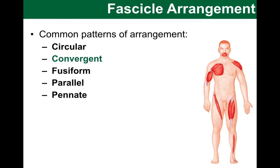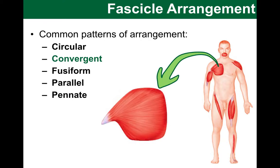How about convergent ones? In convergent fiber arrangements we have a broad origin that then converges into one insertion. The example we have here is the pectoralis major muscle — our most prominent chest muscle.